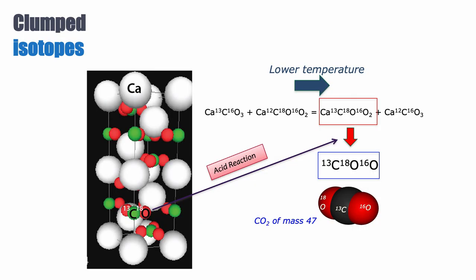So then what we do, we acidify this particular species and we liberate a CO2 of mass 47—47 because one C13, one O18, one O16 give you a mass of 47. And this is the famous clumped isotopes, where the C13 and O18 are clumped together.